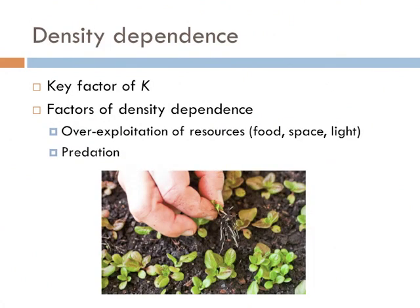Perhaps the most important factor determining the value of K is density dependence. Factors that affect density dependence include predation and over-exploitation of resources. The higher the prey population becomes, the easier it is for predators to capture them. Another major determinant of carrying capacity is resource availability. As a population colonizes a new area, resources are abundant and growth is exponential — density independent. However, once food, space, or light become limited, exponential growth slows but continues toward the carrying capacity. If you've ever had a garden, you know about density dependence: after seeds sprout, you must thin your plants, otherwise all seedlings compete for limited light and space, and they won't produce well at all.